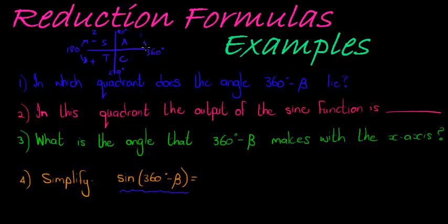So 360 plus would again be in that quadrant, 360 minus would be in the fourth quadrant. So 360 minus beta is in the fourth quadrant.